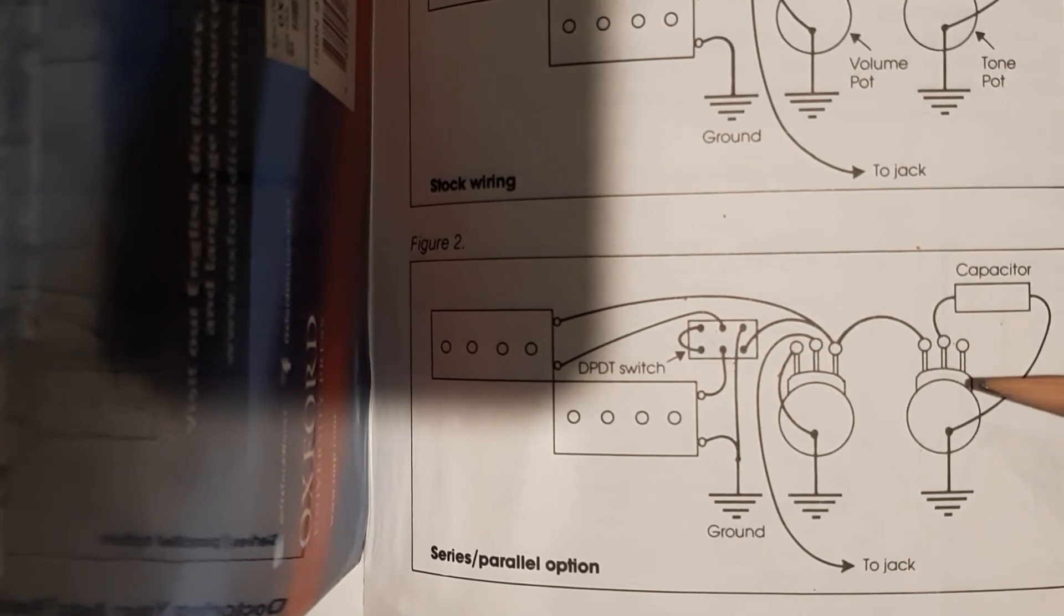What you're doing is you're taking the signal from your pickups and you're bleeding the high end off of it to ground. That's why as you engage your tone pot it gets more muddy, your high end goes away.